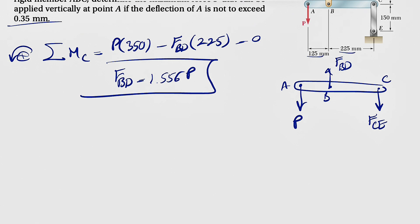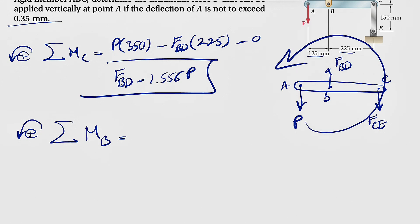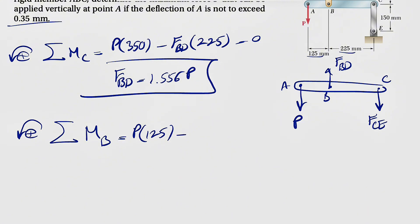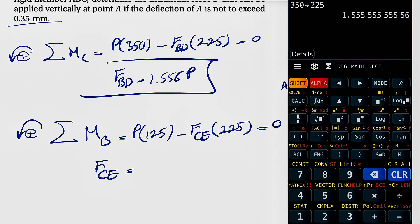Now we do the same for FCE — sum of all moments about point B, again counterclockwise positive. We have the moment of P about B, counterclockwise, so positive: P times the distance from A to B, which is 125. Then minus FCE times the distance between B and C, which is 225, equals zero. So FCE equals 125 divided by 225, giving us 0.556P.